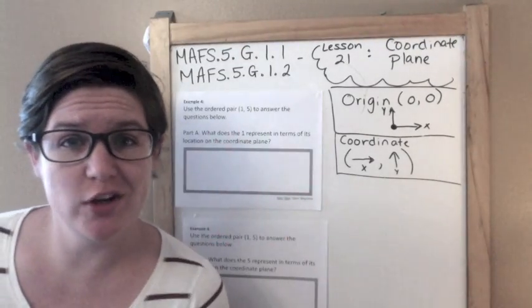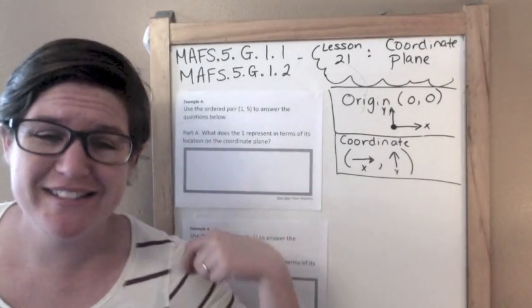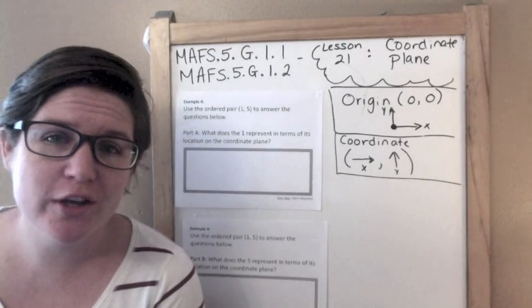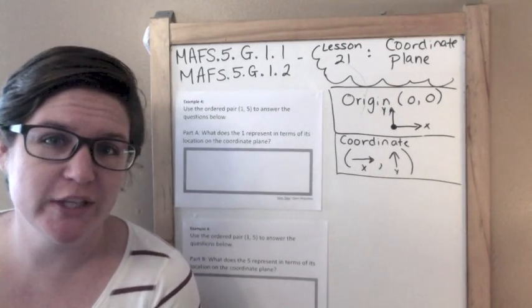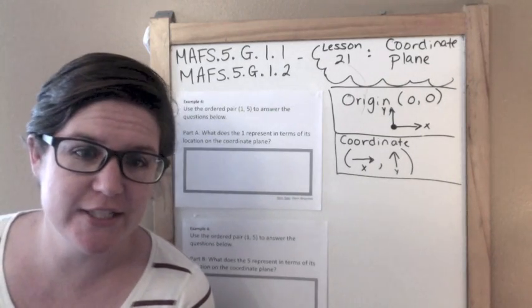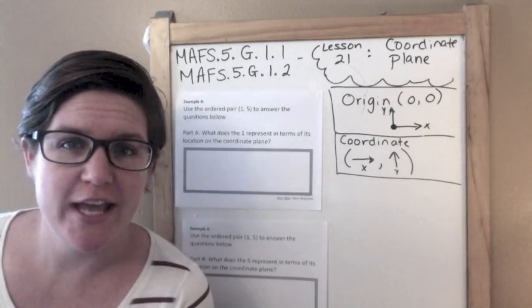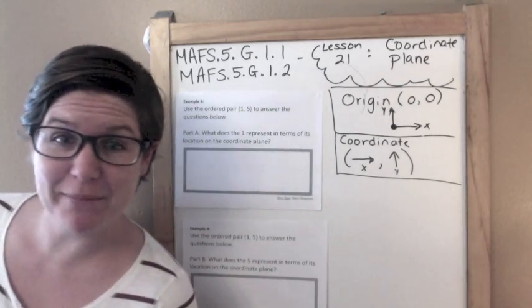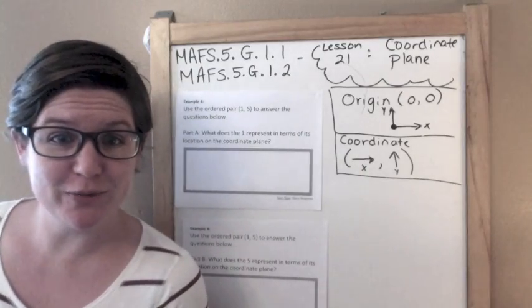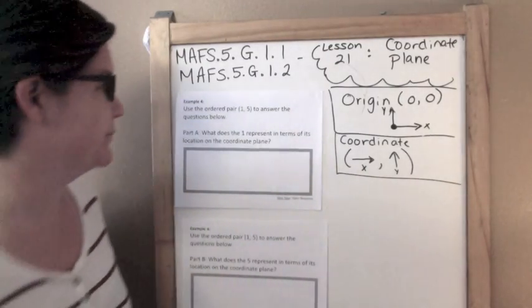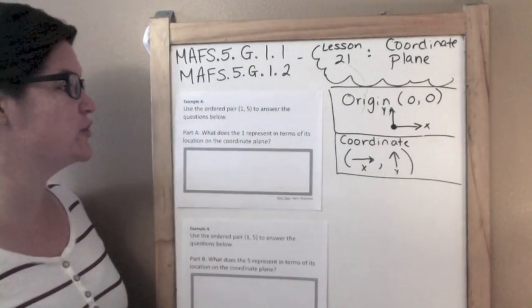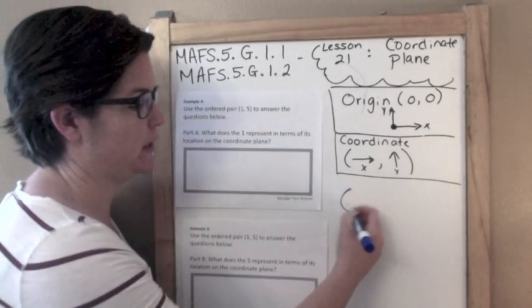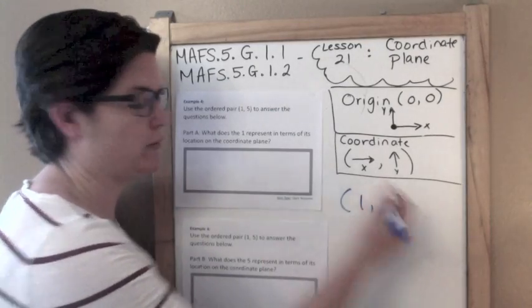All right, here we are at example four. It's our last one for today. Yes, I changed. And the reason why is because I recorded this really early this morning, and I didn't get a chance to finish it. And so now I'm back. So here I am, back from work and ready to record some more. So, example four, use the ordered pair one, five to answer the questions below. So we're using this ordered pair right here.